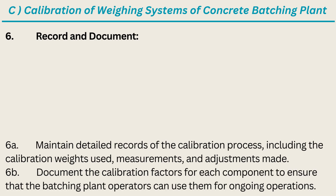Step 6: Record and Document. A. Maintain detailed records of the calibration process, including the calibration weights used, measurements, and adjustments made. B. Document the calibration factors for each component to ensure that the batching plant operators can use them for ongoing operations.